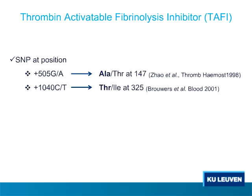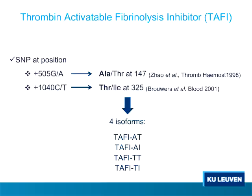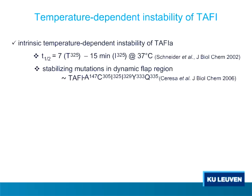A number of SNPs have been reported in the CPB2 gene, but only two result in an amino acid substitution: position 147, where it can be either alanine or threonine, and position 325, where it can be either threonine or isoleucine. The alanine at position 147 and threonine at position 325 are the most abundant, resulting in four different TAFI isoforms. The amino acid at position 325 determines the half-life of the active protein. A threonine gives a half-life of only 7 minutes, while an isoleucine extends it to 15 minutes. A number of groups have mutated residues to stabilize the TAFI-A structure, and our group mutated four residues to make a mutant with a 180-fold increased half-life.